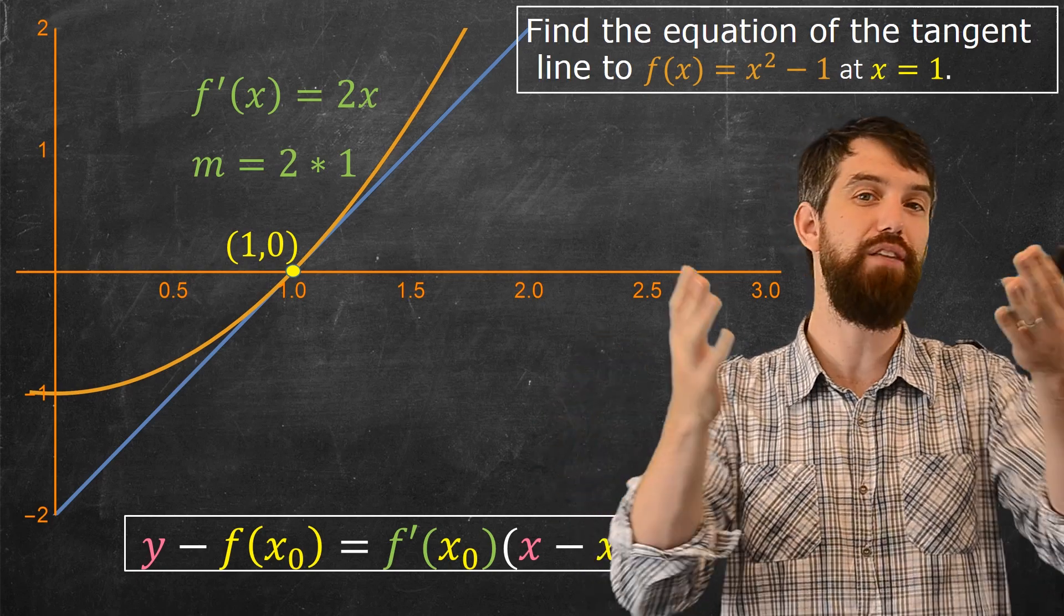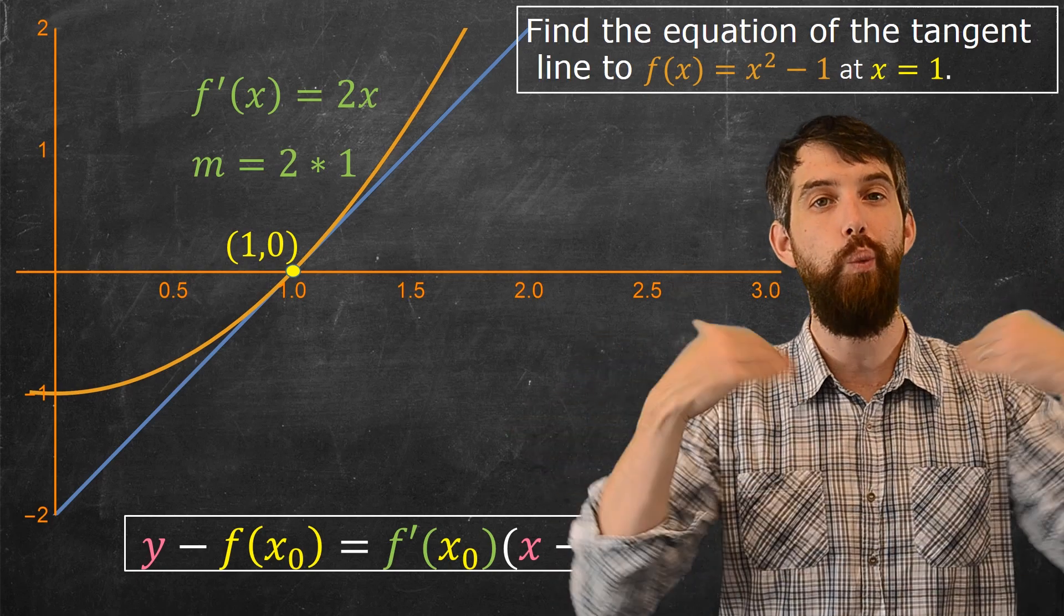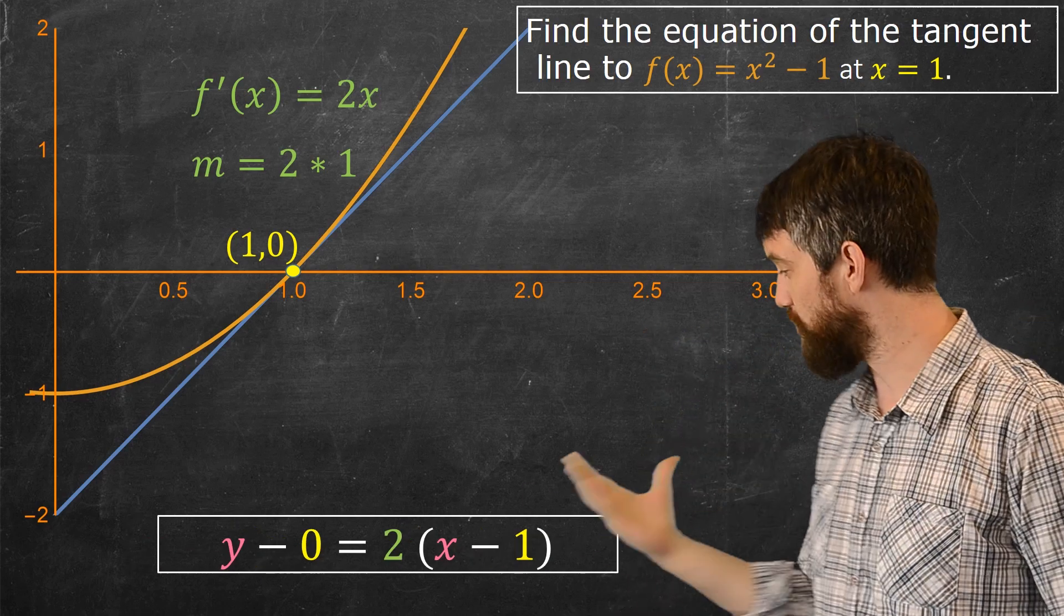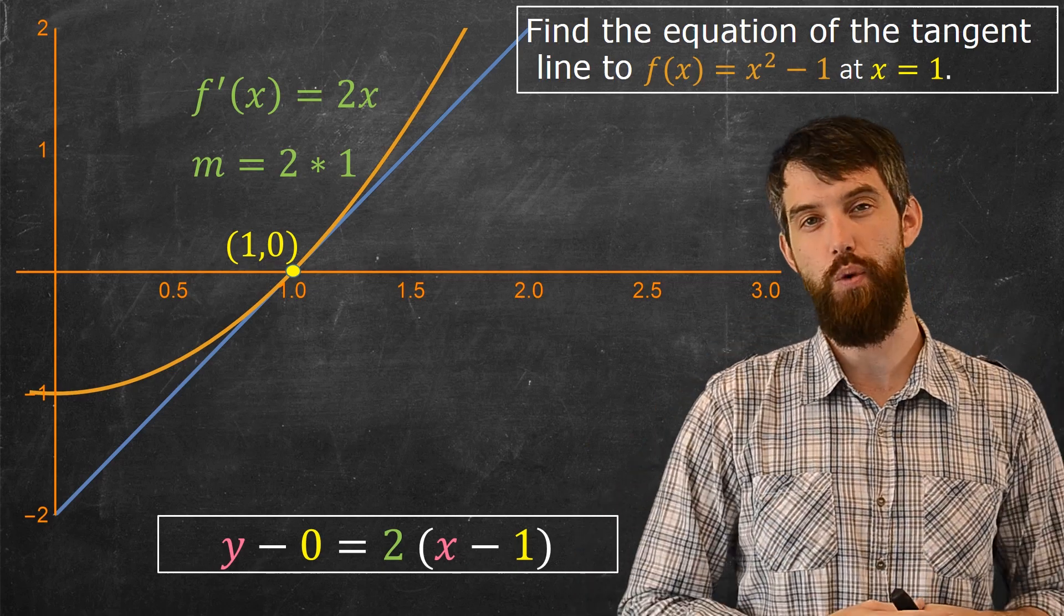All that remains is for us to plug in the values for our specific example. Our x-naught here is 1, our y-naught is 0, and our m is 2. All those things in, and that's what I get. y minus 0 is equal to twice x minus 1.